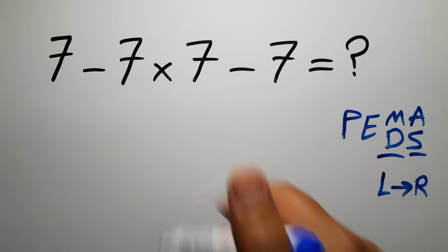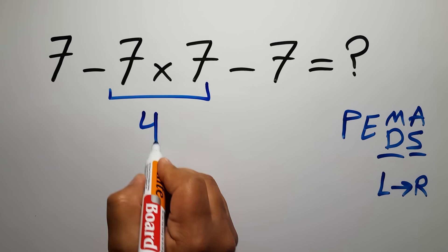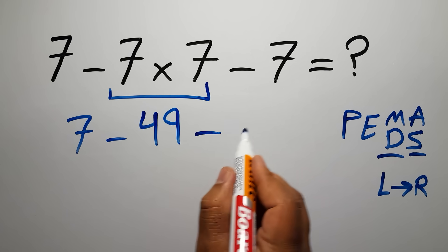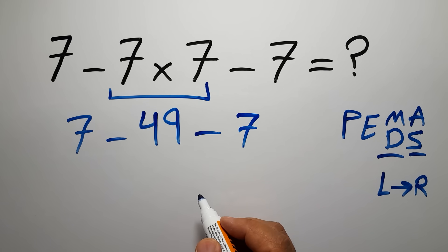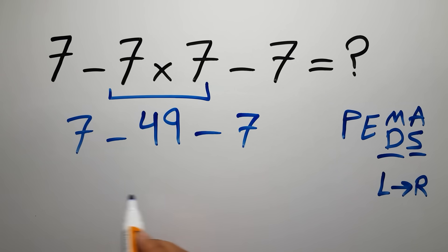Okay, so first 7 times 7 which gives us 49. So we have 7 minus 49 minus 7. Now we have two subtractions and we have to work from left to right. So first, 7 minus 49 which gives us negative 42.